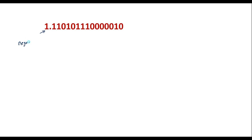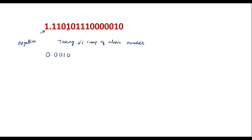Now we find the decimal equivalent of the second Q15 number. The MSB is 1, which indicates the number is negative. In that case, we first take the 2's complement. We know 2's complement equals 1's complement plus 1. The 1's complement is found by replacing each 1 with 0 and each 0 with 1, giving us 0.0010 followed by five 0s, then 1, 1, 1, 1, 1, 1, 1.